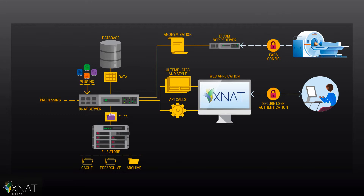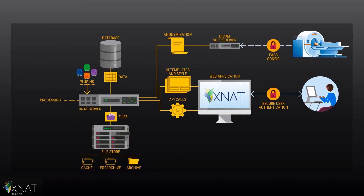XNAT reserves three spaces in your server's file system for storing files: a cache space, a pre-archive, and an archive. The pre-archive is a dedicated file system for temporarily storing DICOM image files, whereas the archive is dedicated for long-term storage of all resource files. We recommend that if you're setting up backups for your file system, that you only backup your archive.